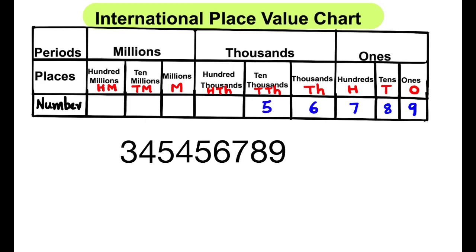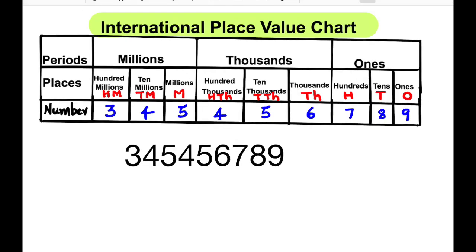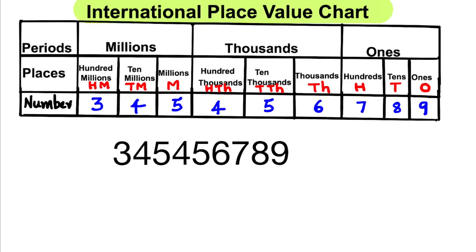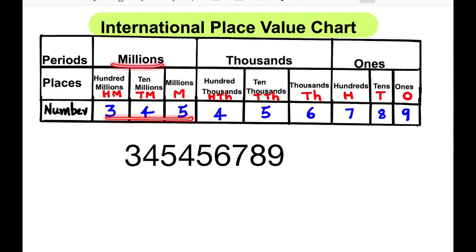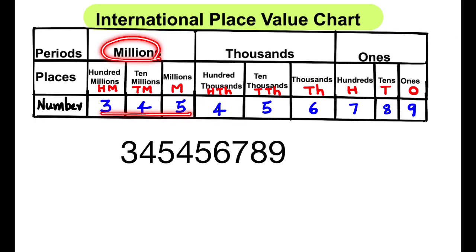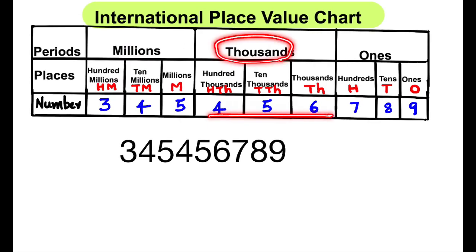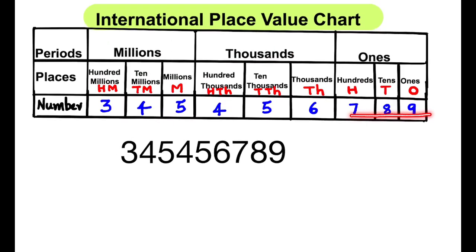5 in the ten thousands place, 4 in the hundred thousands place, 5 in the millions place, 4 in the ten millions place, and 3 in the hundred millions place. This number is read as three hundred forty-five million, four hundred fifty-six thousand, seven hundred eighty-nine.